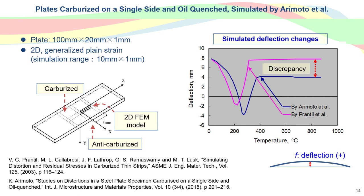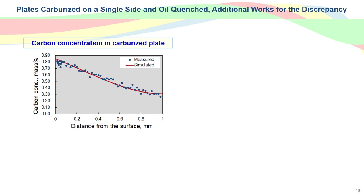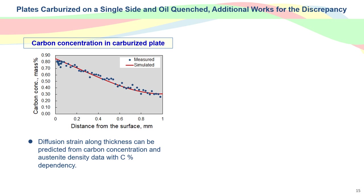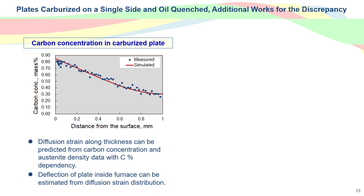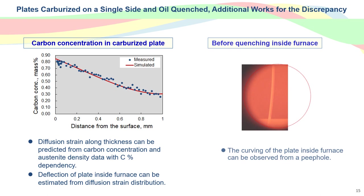There is a discrepancy in the deflection inside the furnace. Our experimental results include carbon concentration distribution. Diffusion strain around thickness can be predicted from the carbon concentration distribution and austenite density data with carbon concentration dependence. This diffusion strain distribution suggests around 4 mm deflection of the plate inside the furnace by manual calculation. The considerable deflection in the specimen at high temperature was clarified by a photograph taken inside another furnace.